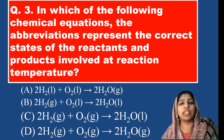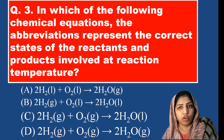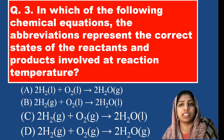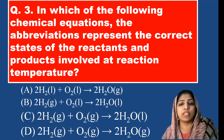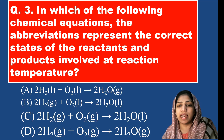In which of the following chemical equations do the abbreviations represent the correct states of reactants and products at reaction temperature? At normal reaction temperature, hydrogen and oxygen are in gaseous state, and water is in liquid state. Options where hydrogen or oxygen are written as liquid are wrong. Option C — hydrogen gas reacts giving water as liquid — is the correct answer.